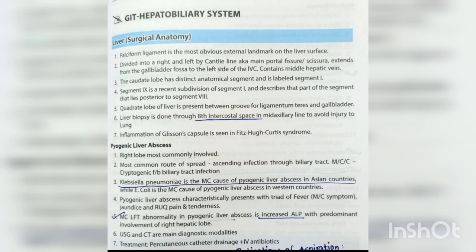The quadrate lobe of the liver is present between the groove for ligamentum teres and the gallbladder. Liver biopsy is done through the eighth intercostal space in the mid-axillary line to avoid injury to the lung. Inflammation of Glisson's capsule is seen in Fitz-Hugh-Curtis syndrome.